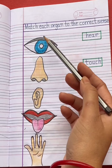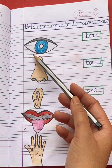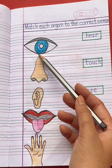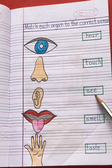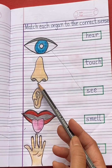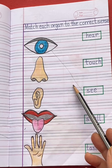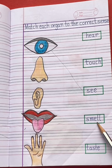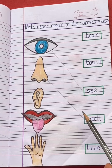Next question is: match each organ to the correct sense. Our first organ is eyes — I help us to see. S-E-E. See ka matlab hota hai dekhna — I help us to see. So draw a line. Next organ is nose — nose helps us to smell. S-M-E-L-L. Smell ka matlab hota hai sungna. So draw a line.